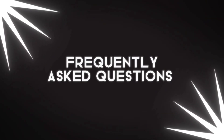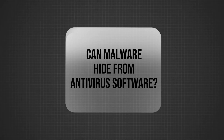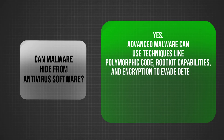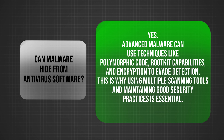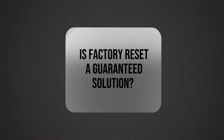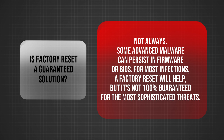Frequently asked questions: Can malware hide from antivirus software? Yes — advanced malware can use techniques like polymorphic code, rootkit capabilities, and encryption to evade detection. This is why using multiple scanning tools and maintaining good security practices is essential. Is a factory reset a guaranteed solution? Not always — some advanced malware can persist in firmware or BIOS. For most infections a factory reset will help, but it's not 100% guaranteed for the most sophisticated threats.